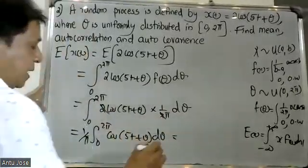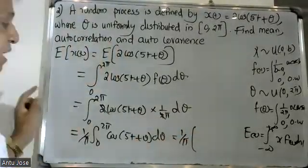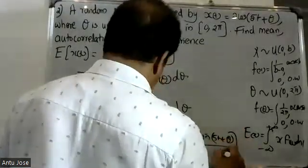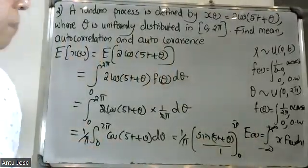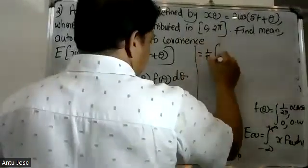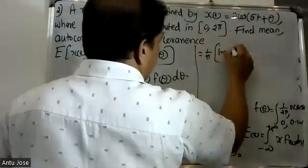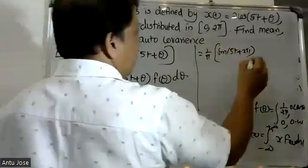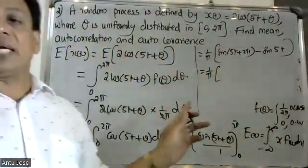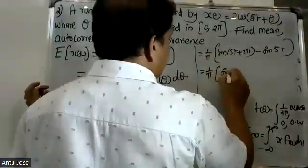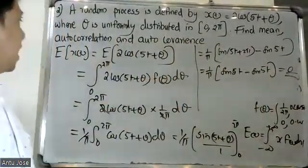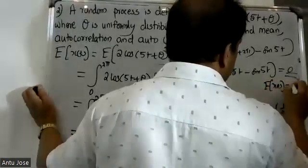Evaluating the integral: E[x(t)] = (1/(2π)) × integral from 0 to 2π of 2cos(5t + θ) dθ. Integrating, we get (1/(2π)) × [sin(5t + θ)] from 0 to 2π, which gives (1/(2π)) × (1/5) × [sin(5t + 2π) − sin(5t)]. Since sin(5t + 2π) = sin(5t), the result is zero.